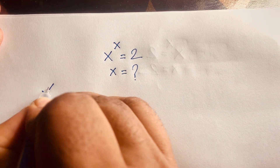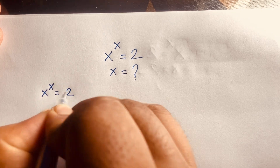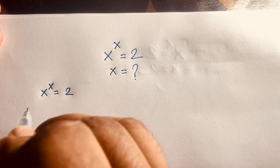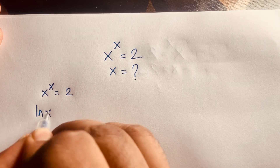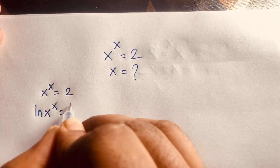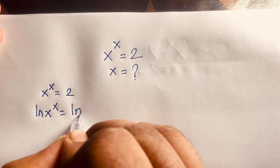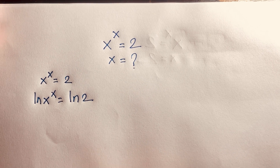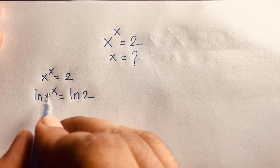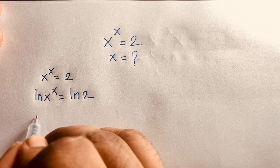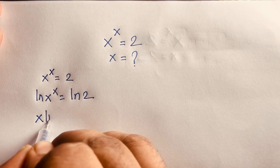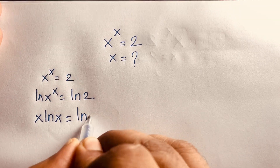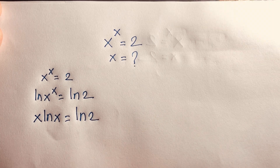Our question is x to the power x is equal to 2. If we apply the natural log (ln) to both sides, we get ln(x^x) = ln(2). According to logarithm rules, the exponent x moves to the front, giving us x·ln(x) = ln(2).